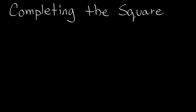Completing the square is a technique that we use to solve quadratic equations. A quadratic equation in standard form has some coefficient a multiplied by x squared, plus some coefficient b multiplied by x, plus some coefficient c, and in standard form that equals zero. Completing the square is a method we can use to solve one of these types of equations — meaning we can find the x values that make this statement true.